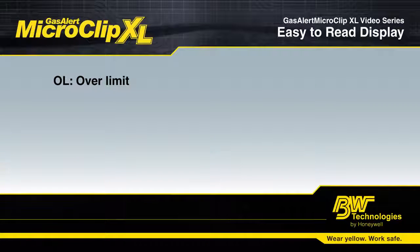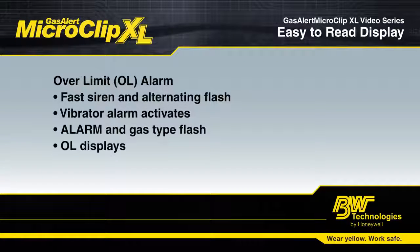The fifth type of alarm is an OL, or Over Limit Alarm. This means that the level of gas in the environment is beyond what the sensor can measure. OL will flash in place of the reading of that sensor.